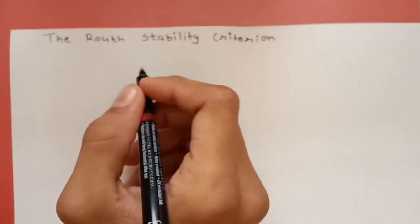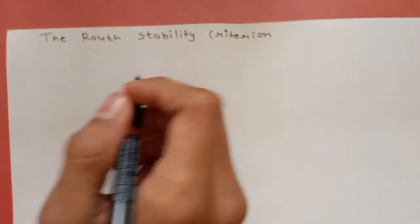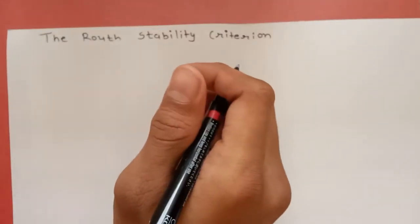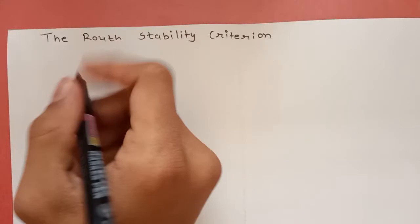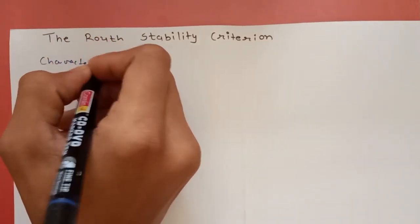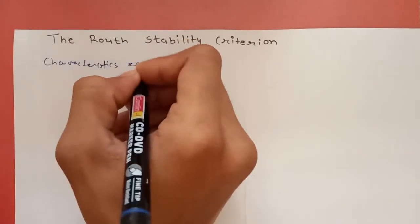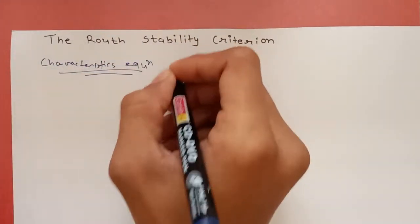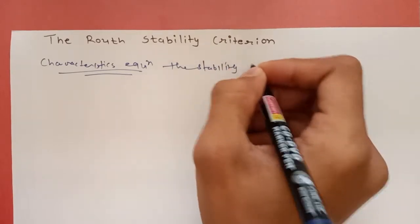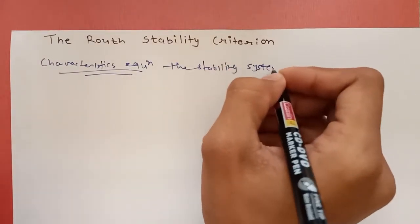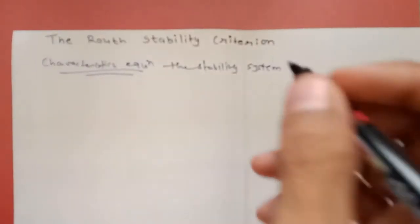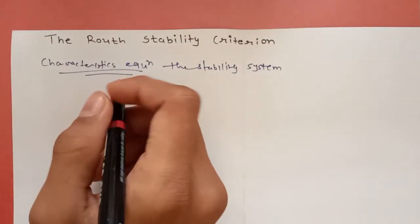Today our topic is the Routh Stability Criteria, also known as RH criteria. From the characteristic equation, we are able to find the stability of a system. Two scientists invented two methods for finding stability using the characteristic equation.